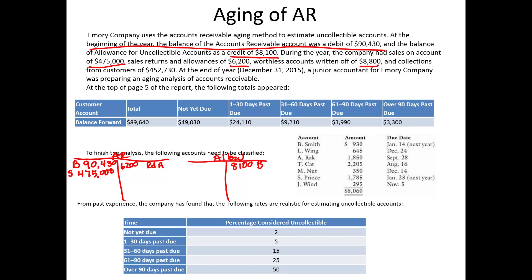We also wrote off worthless accounts of $8,800. When we do a write-off, we debit the allowance $8,800 and credit accounts receivable, removing those specific accounts from the books. Collections from customers during the year totaled $452,730.